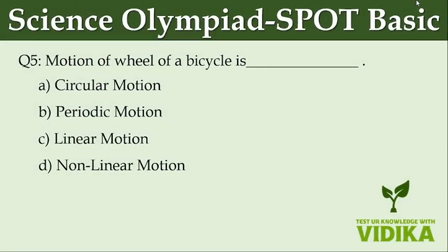The motion of the wheel of a bicycle is dash. Option A, circular motion. Option B, periodic motion. Option C, linear motion. Option D, nonlinear motion.